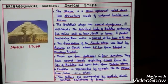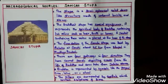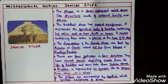The Sanchi Stupa was built by Ashoka at Sanchi, which is about 45 kilometers from Bhopal in Madhya Pradesh. Now we learn the main features of this stupa.